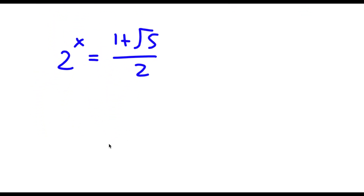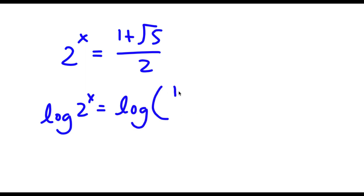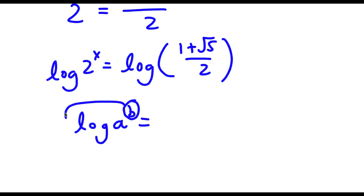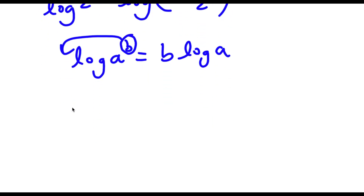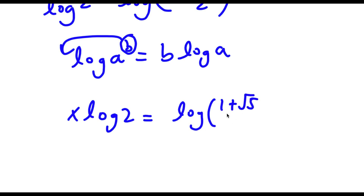To solve this, I'm going to take the log on both sides. So I have log of 2 to the power of x is equal to log of 1 plus the square root of 5 over 2. An important property of logarithms is that log a to the power of b equals b times log a — I can move the exponent to the front. So for log 2 to the power of x, I move x to the front, giving x times log 2 equals log of 1 plus the square root of 5 over 2.